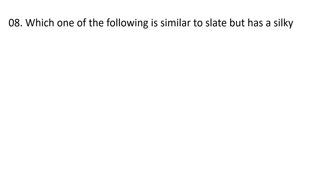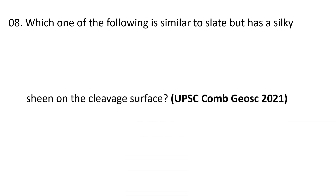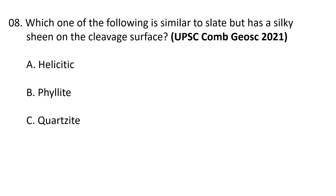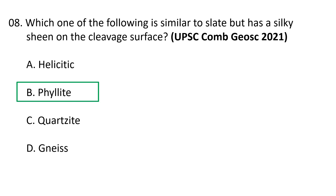Question 8: Which one of the following is similar to slate but has a silky sheen on the cleavage surface? Choices: (a) helicite, (b) phyllite, (c) quartzite, (d) gneiss. The correct option is B — phyllite. Phyllite is similar to slate but has typically been heated to higher temperature; the micas have grown larger and are visible as a sheen on the surface. Phyllite is a foliated metamorphic rock rich in tiny sheets of sericite mica, and is used as decorative aggregate, floor tiles, and exterior building or facing stones.